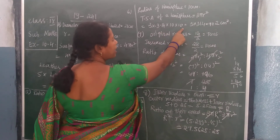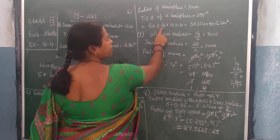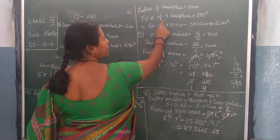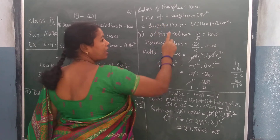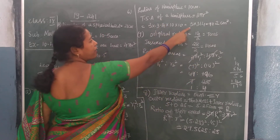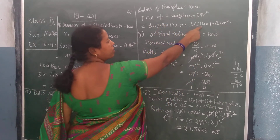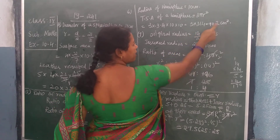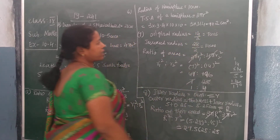10 into 10 is 100. So the decimal point will move 2 places towards the right. That is what I have written: 3 into 314, that is 942 square centimeters.